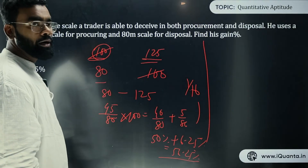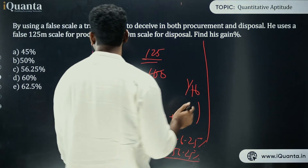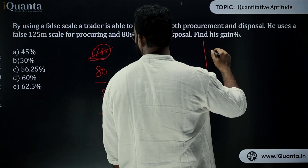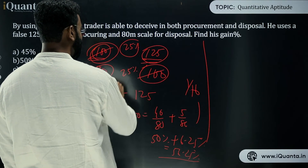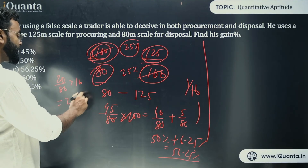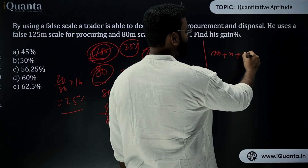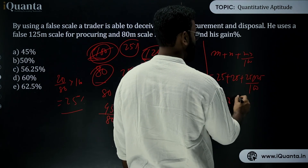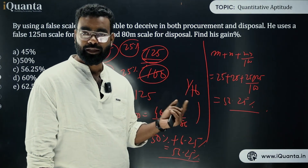This question can also be solved using the successive profit formula. For 80 → 100: profit = 20/80 × 100 = 25%. For 100 → 125: profit = 25%. Using the successive formula: m + n + mn/100 = 25 + 25 + (25 × 25)/100 = 50 + 6.25 = 56.25%. Both methods give the same answer, but the first cross-multiplication method is easier and more direct.